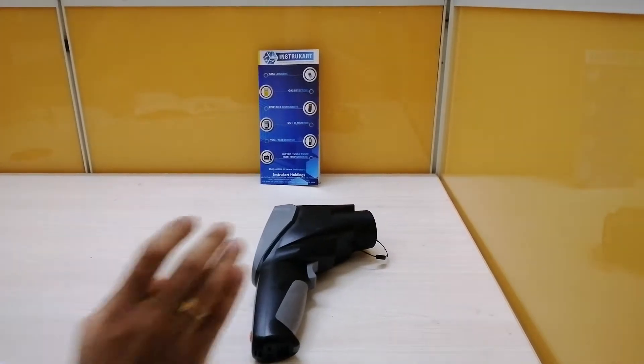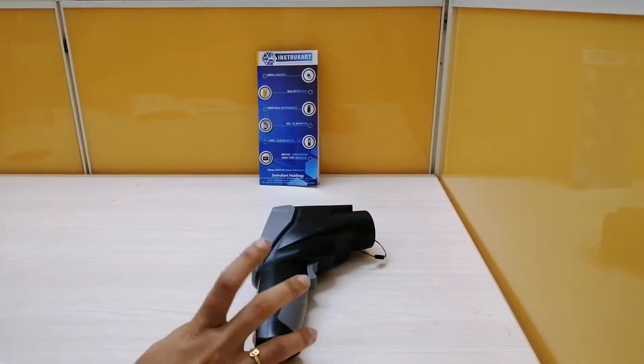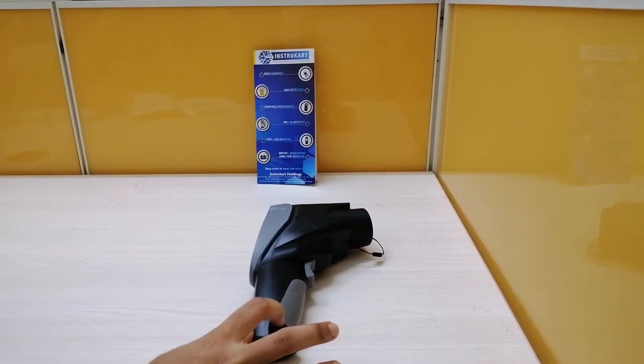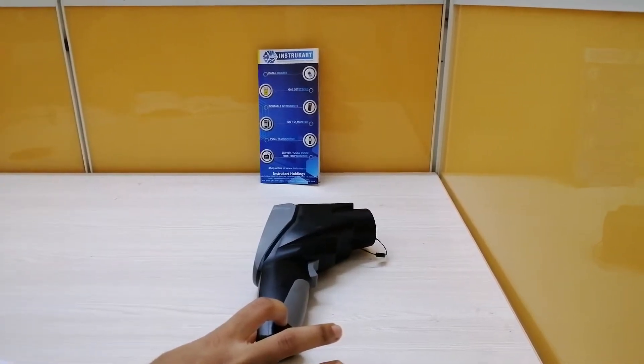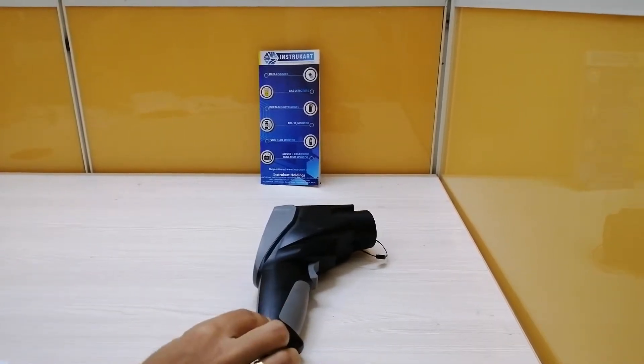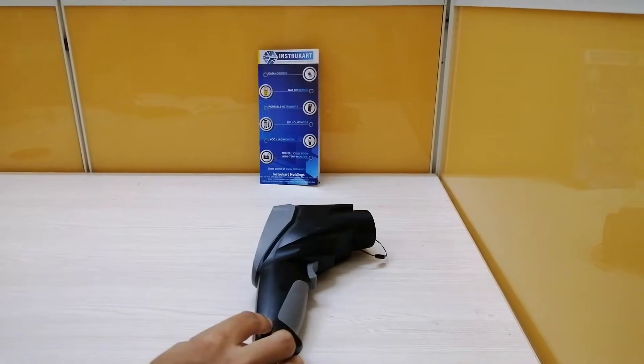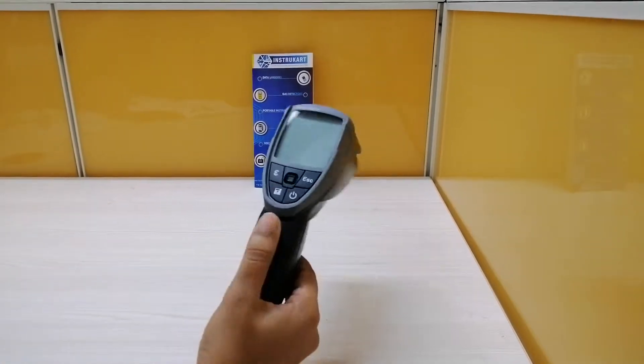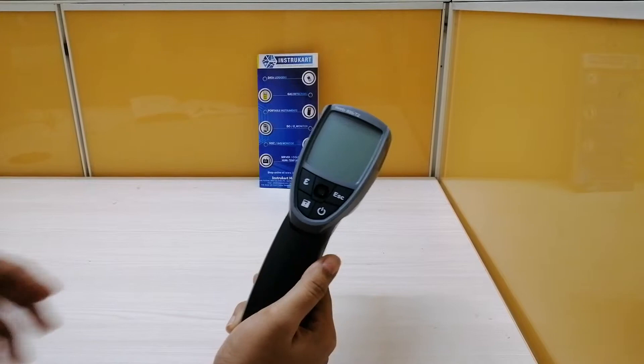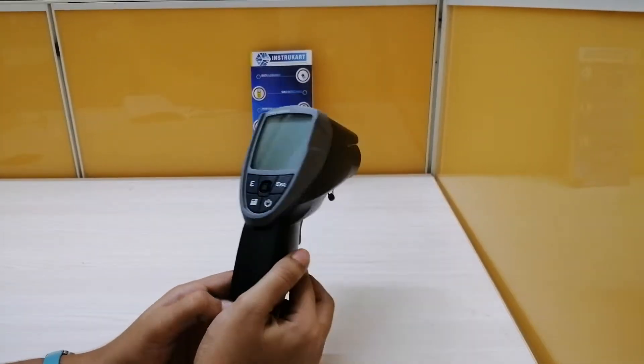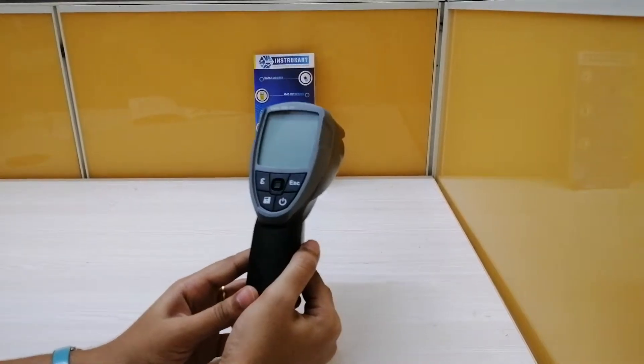Coming to the general specifications, the operating temperature is minus 22 to plus 50 degree centigrade. For the battery, we use three AA batteries. The housing, which you can see here, is ABS plastic. It also comes with a warranty of 2 years.